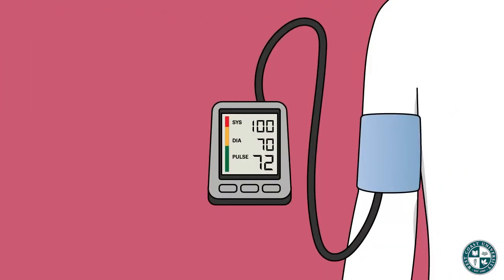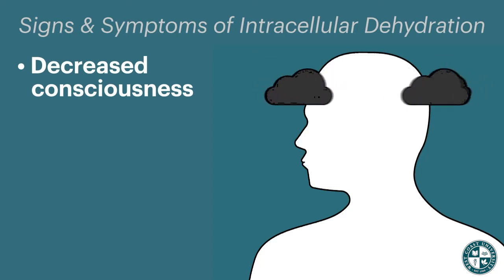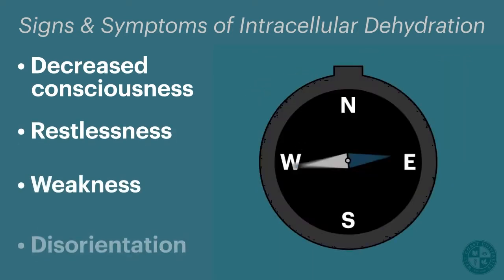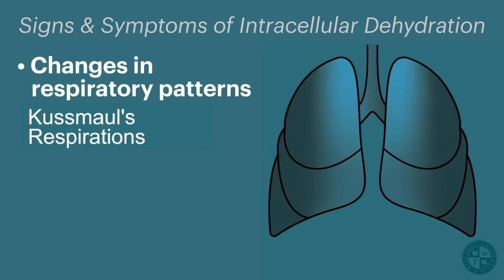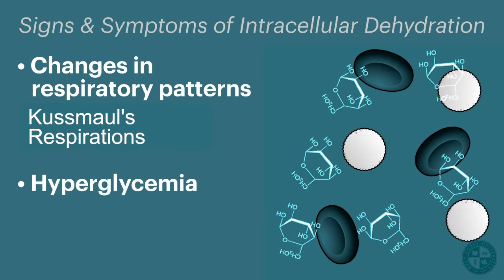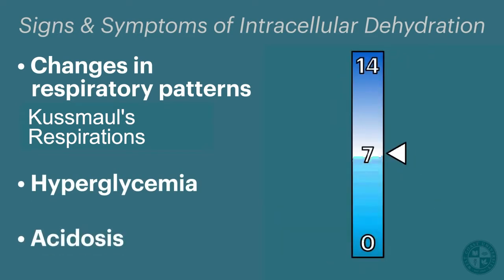Some general nursing considerations when administering these solutions: again, we need baseline vital signs and a head-to-toe assessment. It is extremely important to remember signs and symptoms of someone experiencing intracellular dehydration, which include decreased level of consciousness, restlessness, weakness, disorientation, and changes in respiratory patterns such as Kussmaul's respirations. Laboratory data could indicate hyperglycemia and acidosis, to name a few.